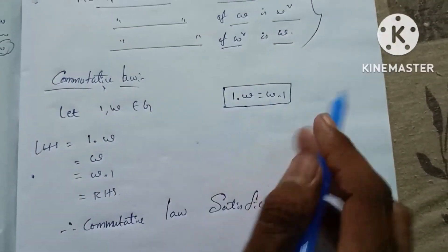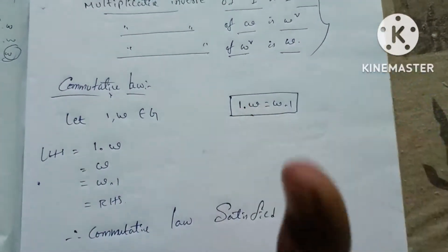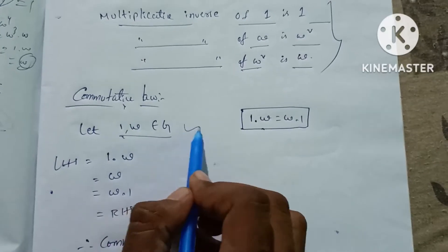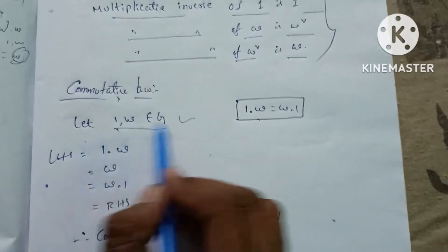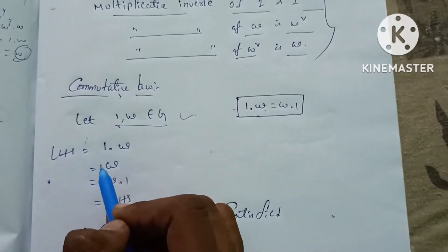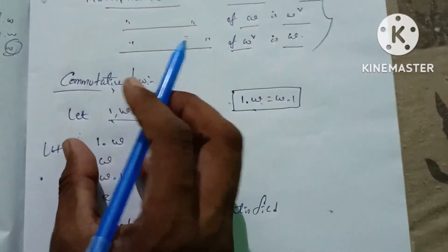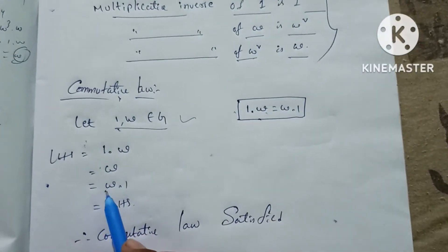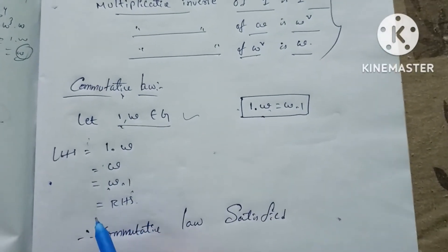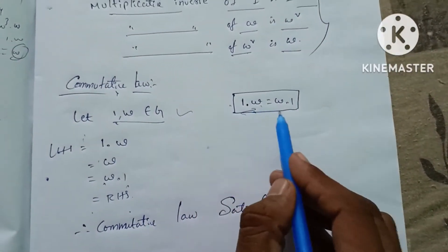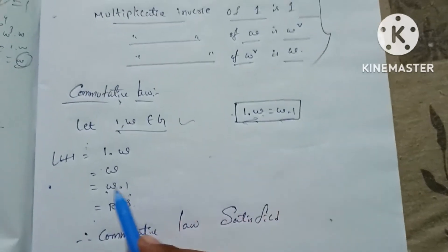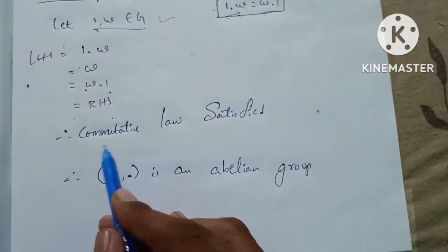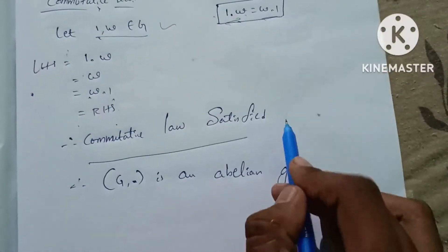The last property is commutativity. We prove that 1 into omega equals omega into 1. Let 1 and omega belong to G. LHS: 1 into omega equals omega. RHS: omega into 1 equals omega. Therefore LHS equals RHS. Commutative law is satisfied.